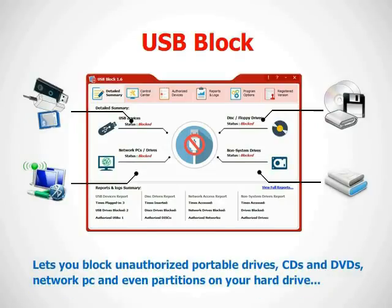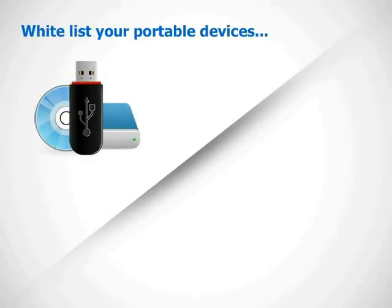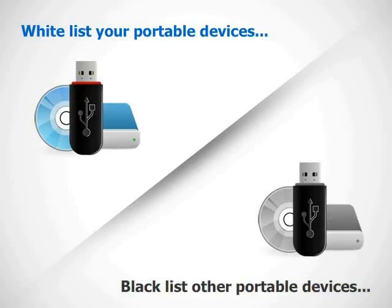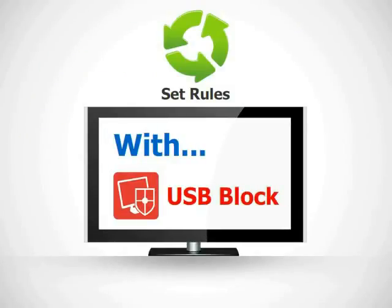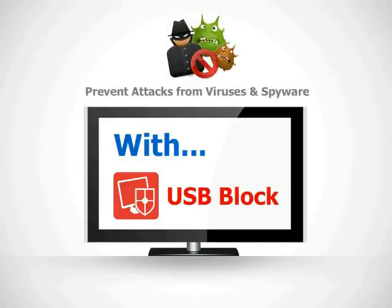USB Block lets you block unauthorized portable drives, CDs and DVDs, other computers on a network, and even unauthorized partitions on your hard drive. It is an authorization-based software with which you can whitelist your own USB drives and portable devices and blacklist all others. You can set rules and defeat penetration into your system by blocking unauthorized access to your computers, as well as by preventing attacks from viruses, worms, and spyware that spread through such mediums.